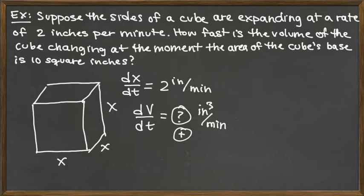At the moment, the area of the cube's base. So let's think about the area of the cube's base. The cube's base itself is a square, and it's an x by x square. So we're talking about the area of that x by x square, that would be x squared. At the moment, the area of the cube's base is equal to 10 square inches. So we are given the fixed snapshot time there to be whenever x squared is equal to 10.